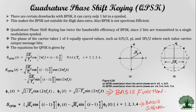Why should we go for Quadrature Phase Shift Keying? Because we have certain drawbacks in the earlier method, Binary Phase Shift Keying. The well-known drawbacks of BPSK are: it carries only one bit per symbol, it is not suitable for high data rates, and it is not spectrum efficient. Because of all these drawbacks, we go for another modulation scheme called Quadrature Phase Shift Keying.